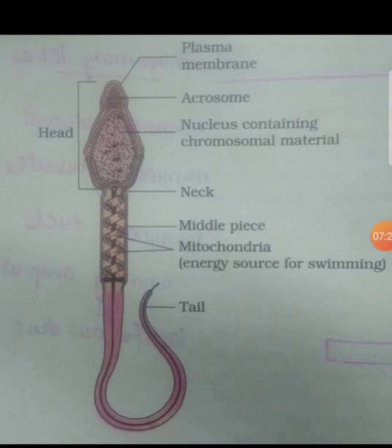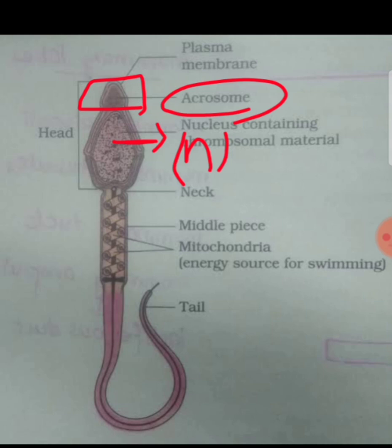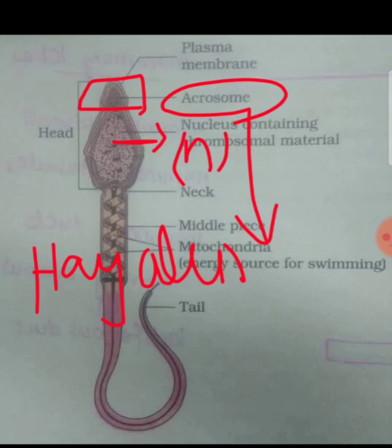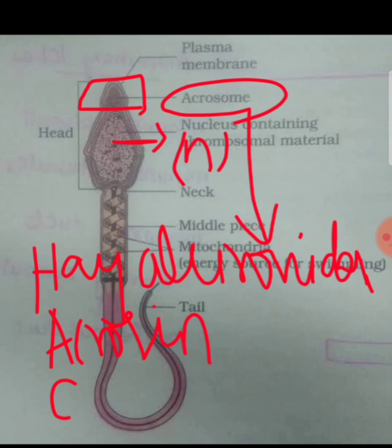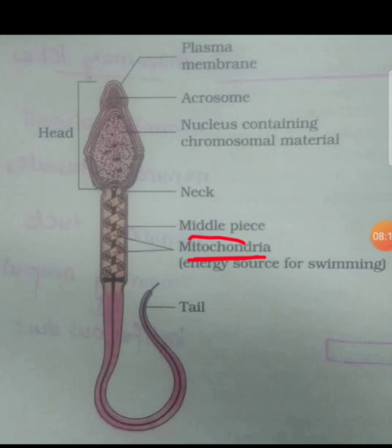A very important diagram is the human sperm. At the head region you can find a haploid nucleus, and above that is the acrosome. In the acrosome you can find many enzymes like hyaluronidase, acrosin, and corona penetrating enzyme. These enzymes help in fertilization of the egg. In the middle region you can find approximately 25 to 30 mitochondria.